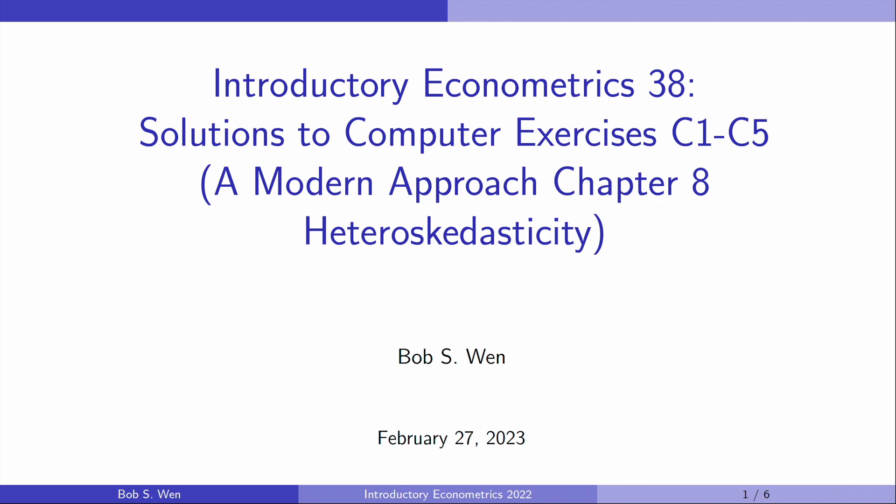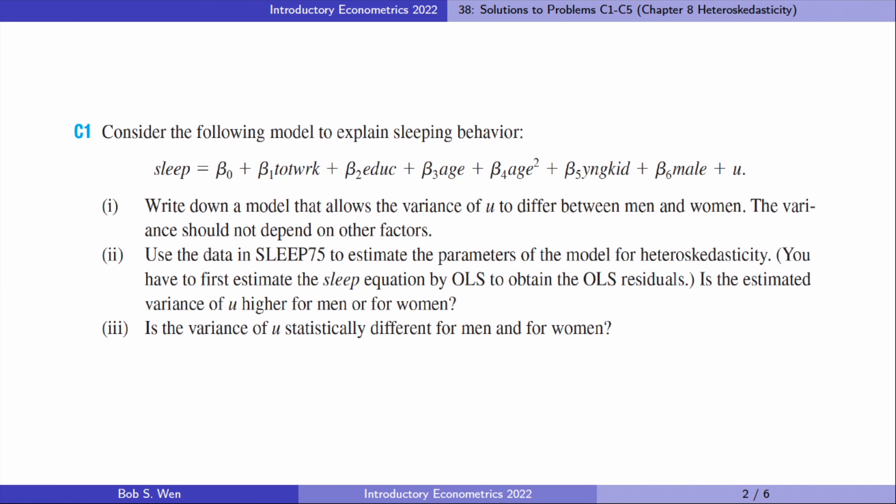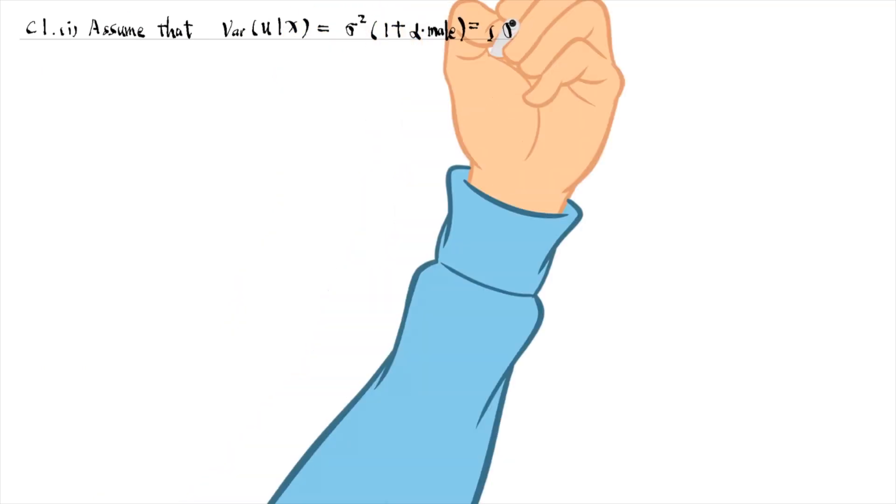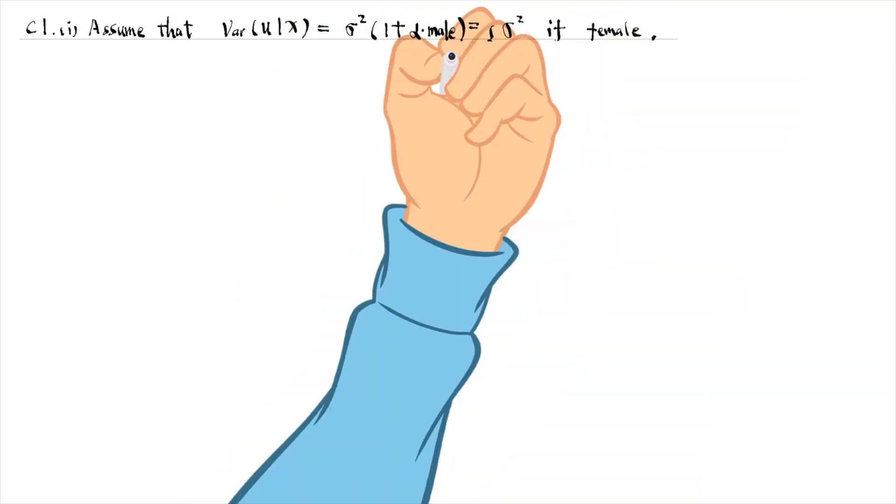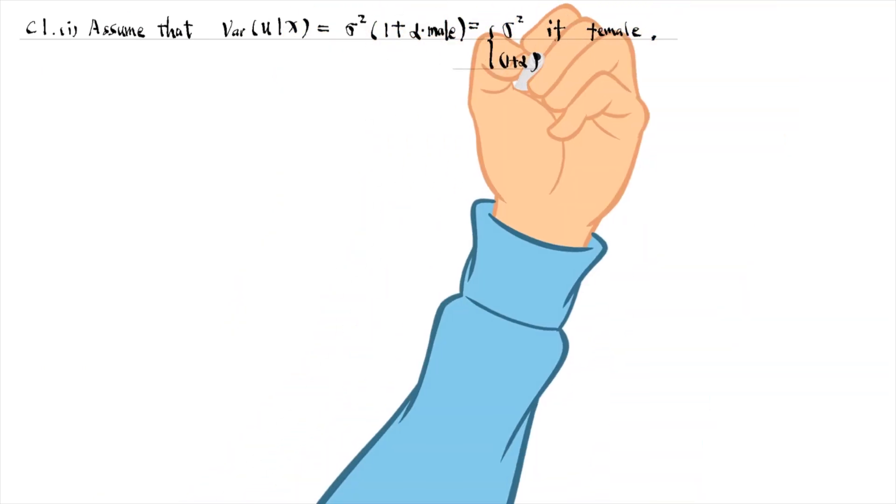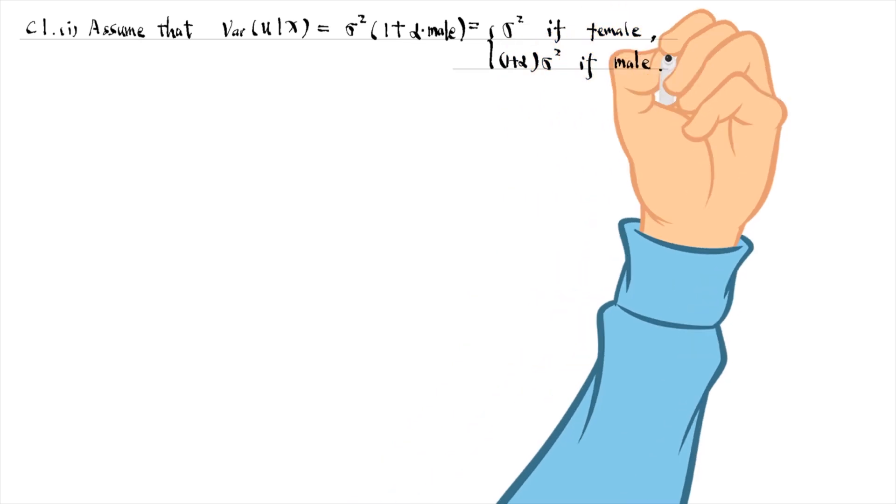We will solve the first five computer exercises today. The first computer exercise is about the test for heteroscedasticity in the variance of the error term. For part 1, we can assume that the variance of the error term conditional on all the explanatory variables is a function of the dummy variable male.